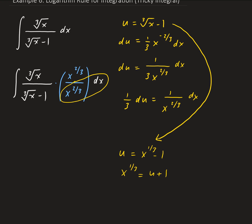The denominator of the integral — cube root of x minus 1 — is going to be u. The expression 1 over x to the 2/3 dx gets replaced by 3 du (since multiplying both sides of du = 1/(3x^(2/3)) dx by 3 gives 3 du = 1/x^(2/3) dx). And the cube root of x, which is x to the 1/3, gets replaced by u plus 1.